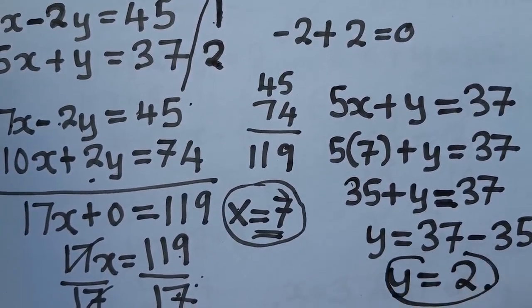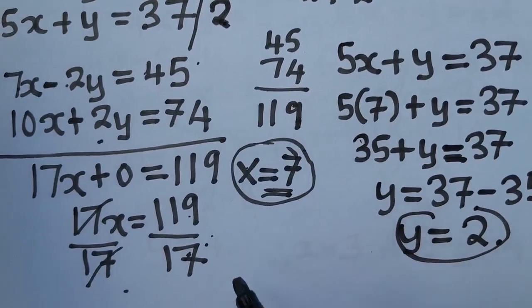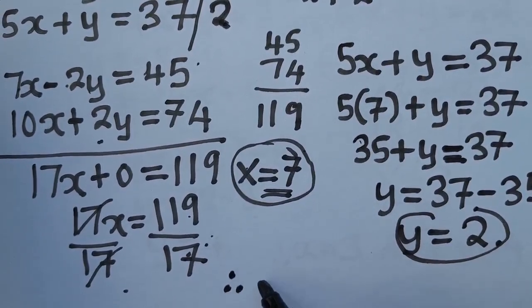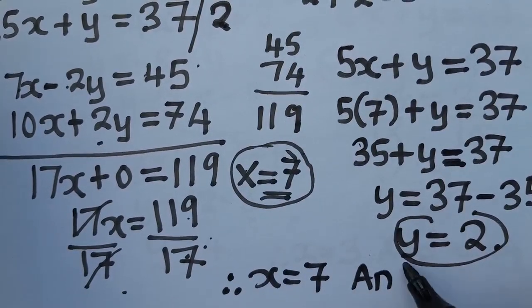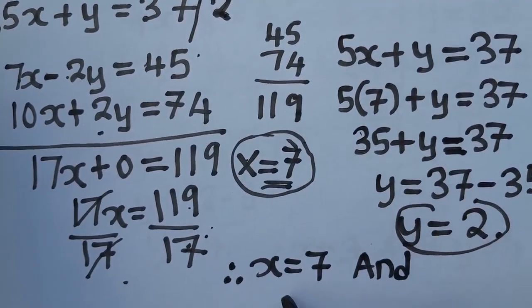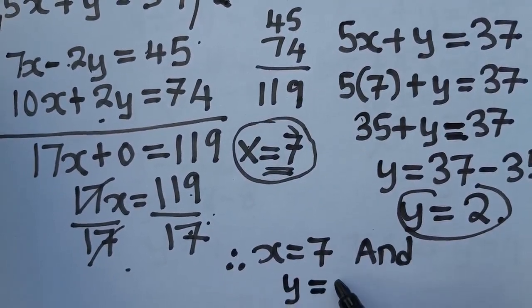Your y is equal to, y is 2, x is 7. You just conclude and say, therefore, x is equal to 7 and y is equal to 2.